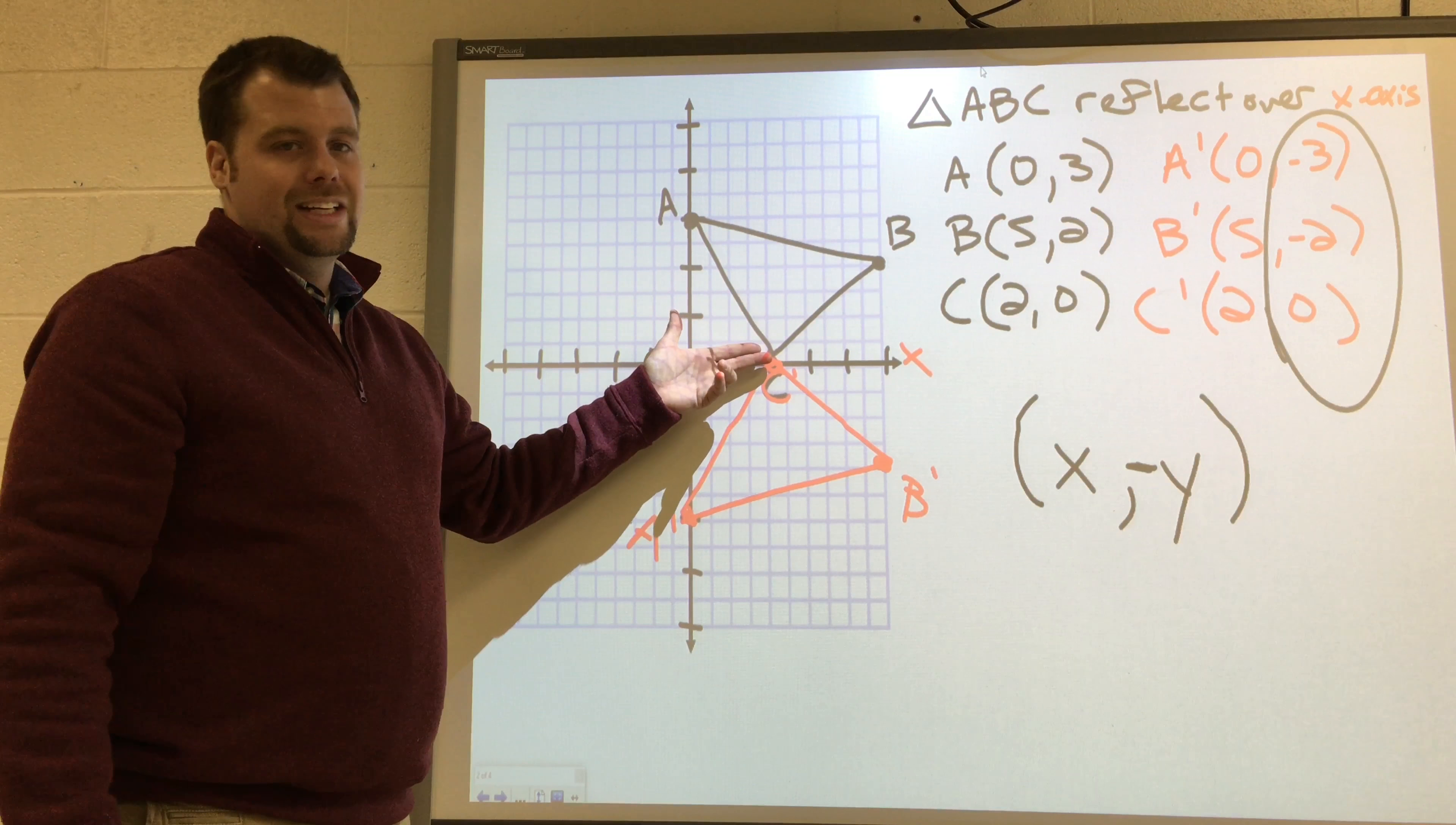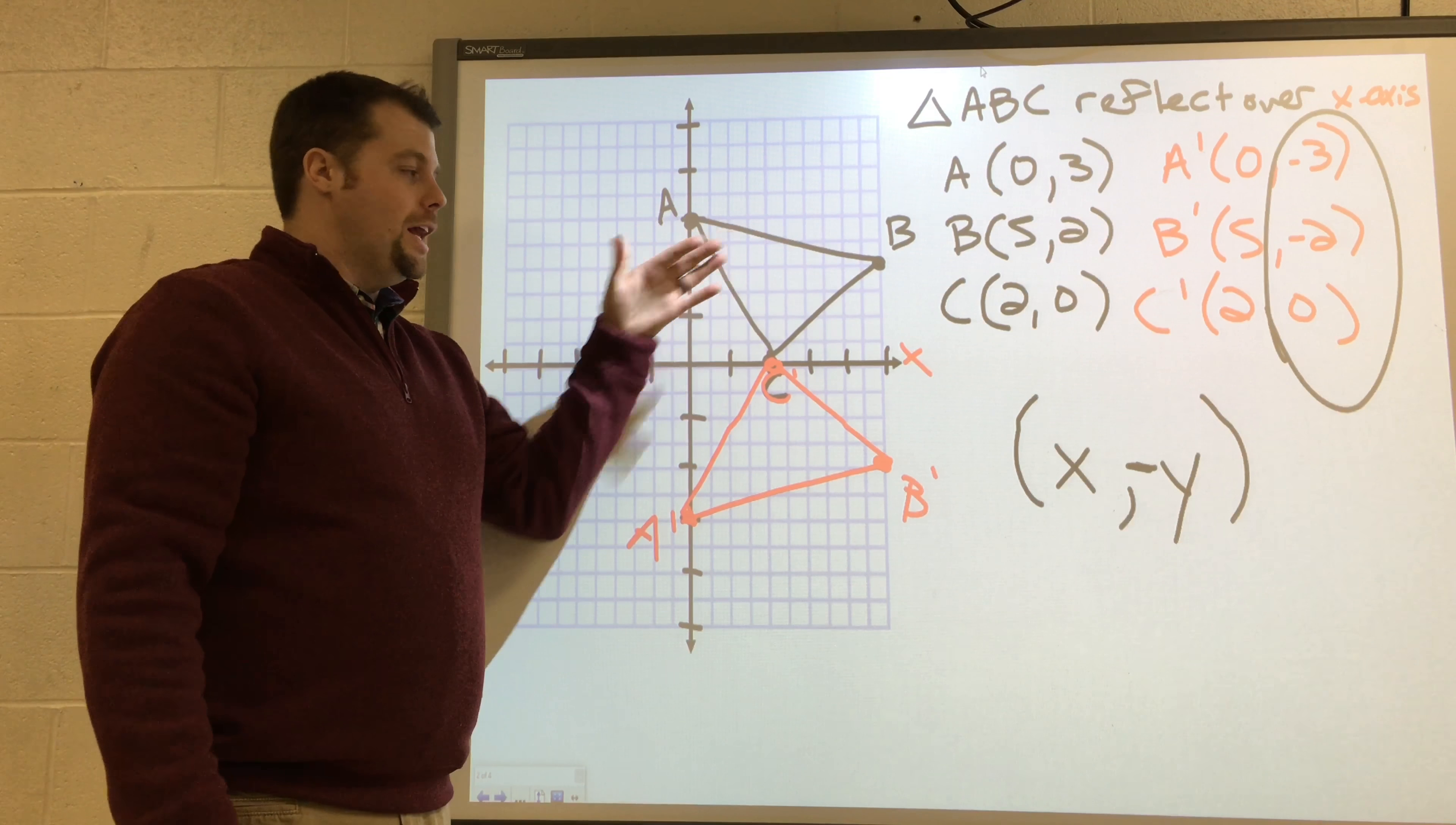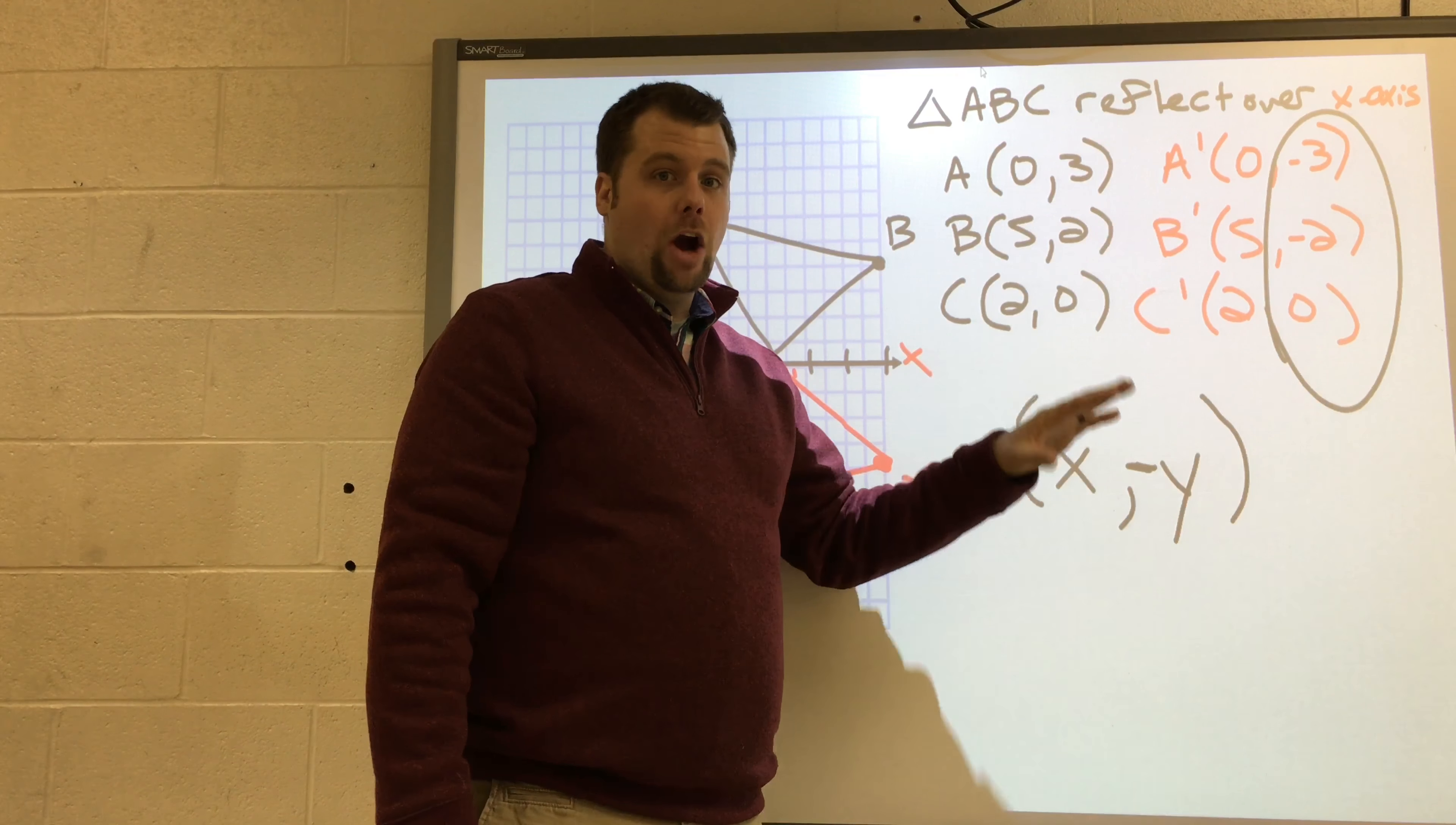If they're zero, they stay zero. And if they were negative, they would move above the line and become positive. But when I reflect over the x-axis, I make all my y values the opposite sign.